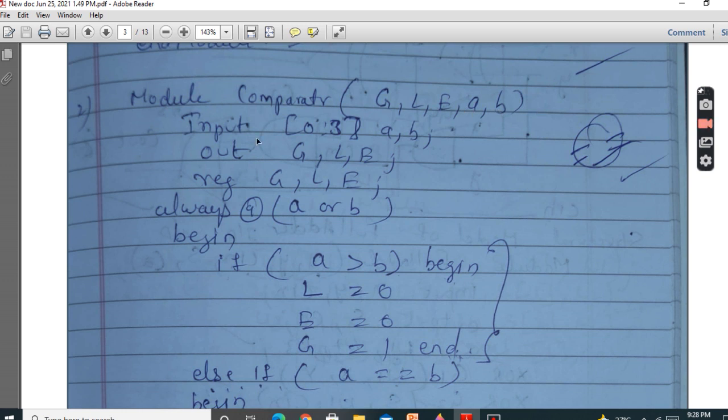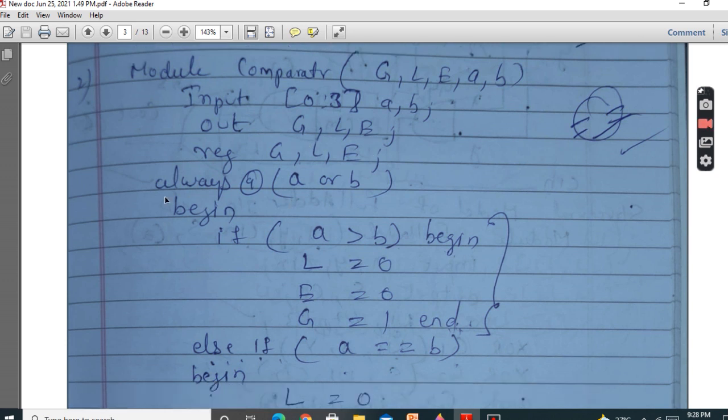G, L, E. So these are inputs. This is the same declaration. In between, temporary variable reg. How to declare outputs G, L, E.